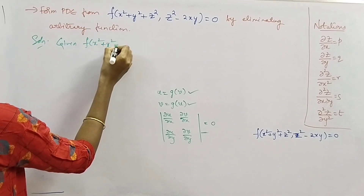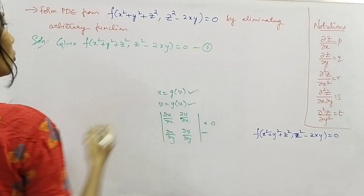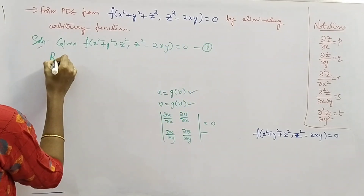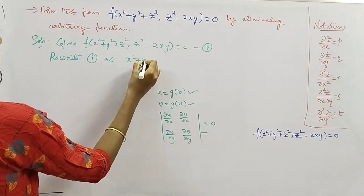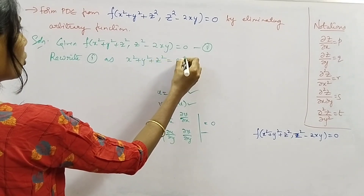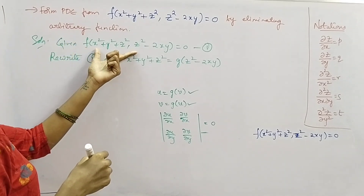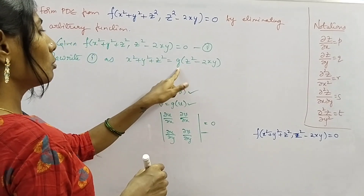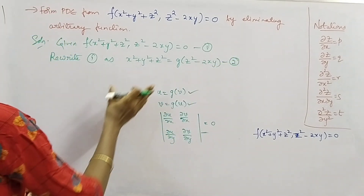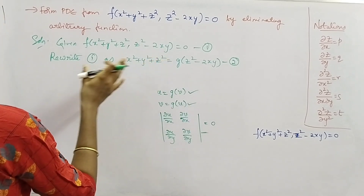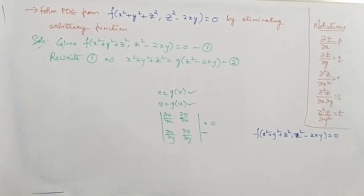Solution: given f(x² + y² + z², z² − 2xy) = 0, consider this as equation number 1. We rewrite this equation as x² + y² + z² = g(z² − 2xy), where if f is an arbitrary function then g will also be an arbitrary function. Consider this as equation number 2. Now we'll partially differentiate equation 2 with respect to x and also with respect to y.